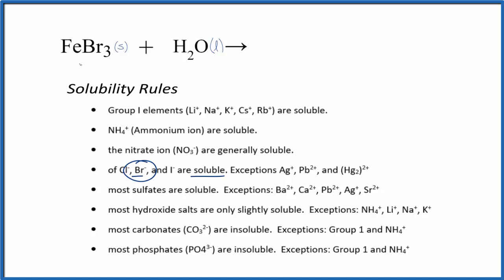We put this in water, it'll break apart into its ions. We don't know the charge on iron, it's a transition metal, but the bromide ion is one minus. Since we have three of them, the iron has to be 3 plus. So we'll have our iron 3 ion and then three of these bromide ions.